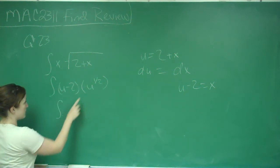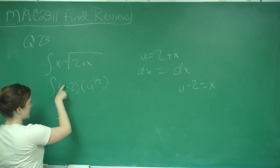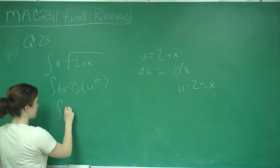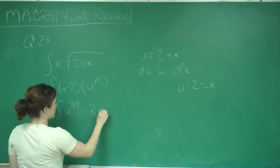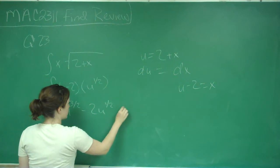This becomes u to the 3/2 minus 2u to the 1/2 du. Now you can just integrate that as normal.